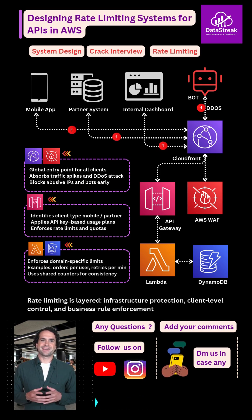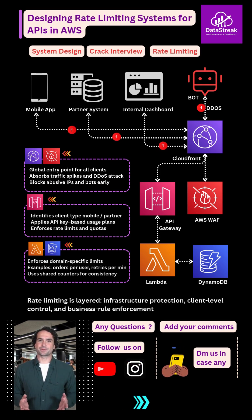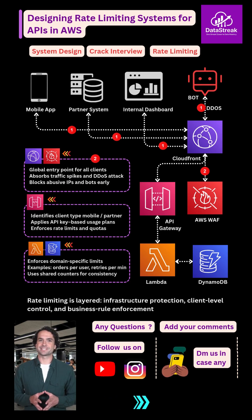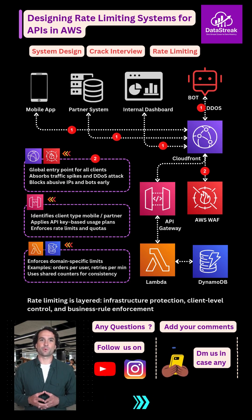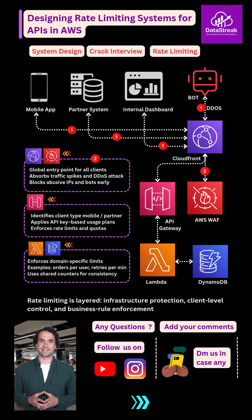Then, AWS WAF checks the traffic and blocks any IP that's sending too many requests, stopping bad traffic early.